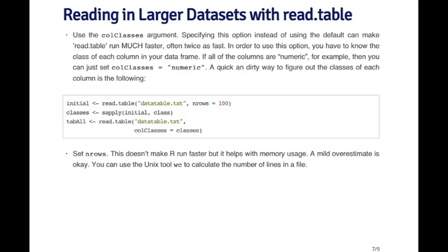The nrows argument is actually very useful too. It doesn't necessarily make R run any faster, but it does help with memory usage. If you can tell R how many rows are going to be read in, then it can calculate the memory that's going to be required and not have to figure it out on the go. Even if you mildly overestimate how many rows there are in the dataset, that's okay. It won't make a difference—it'll still read the correct number of rows.